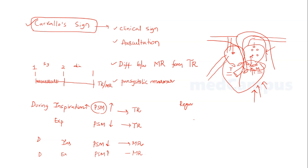So the take-home message: Carvello's sign is a clinical sign heard during auscultation, and it helps you differentiate the pan-systolic murmur — whether it is from mitral regurgitation or from tricuspid regurgitation.